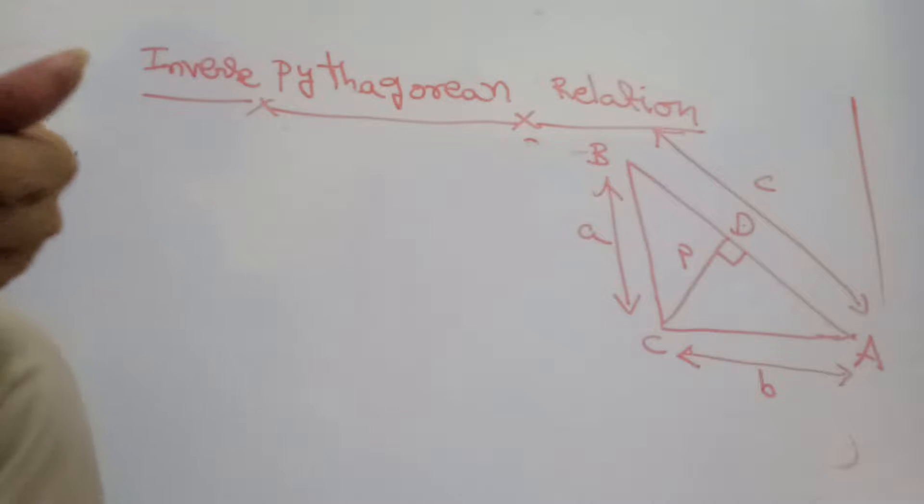Welcome to iSmart Champs. Today we are going to discuss something called the inverse Pythagorean relationship. It happens in a right-angle triangle.